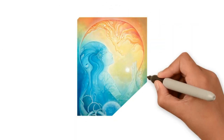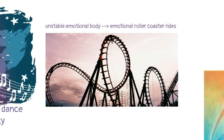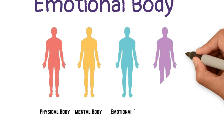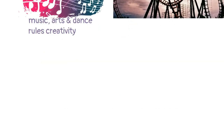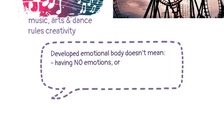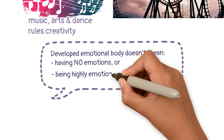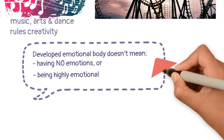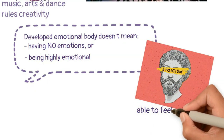Moving along to the emotional body. The emotional body is what makes us sensitive to music, arts, and dance. When this body is unstable, we feel as if we are being tossed around by our emotions, or we feel we can't get off emotional roller coaster rides. Usually the emotional body is the least developed of all the bodies, and more so in people who are highly developed mentally. The most important thing I can tell you about the emotional body is that not having emotions does not mean the emotional body is developed — as neither is being uncontrollably emotional.